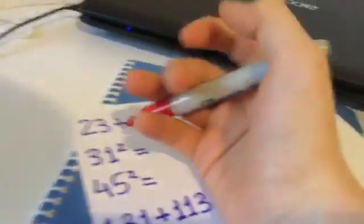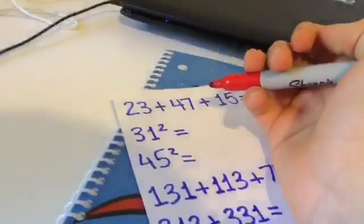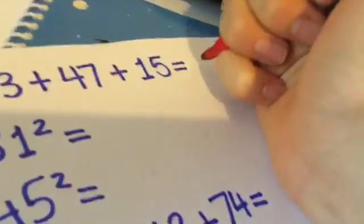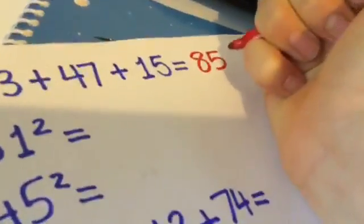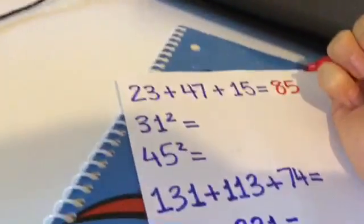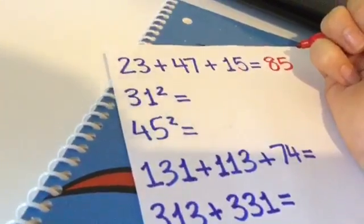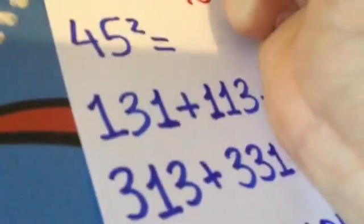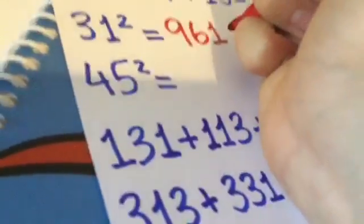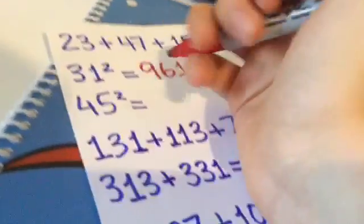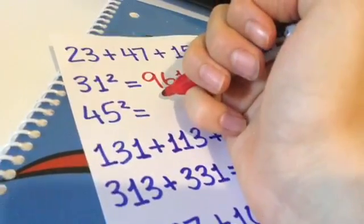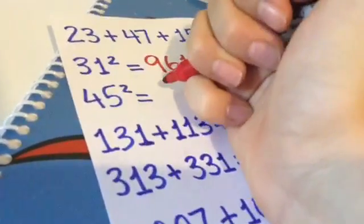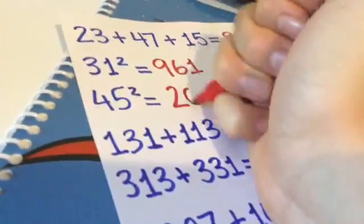So 23 plus 47, not 17. Is 17 plus 15. That's 85. So write 85 there. Okay. So 31 squared, and you have to multiply 31 by 31, which is 961. Okay. And 45 squared, same for 31 squared. I multiply the number by the same. And that is 2025.